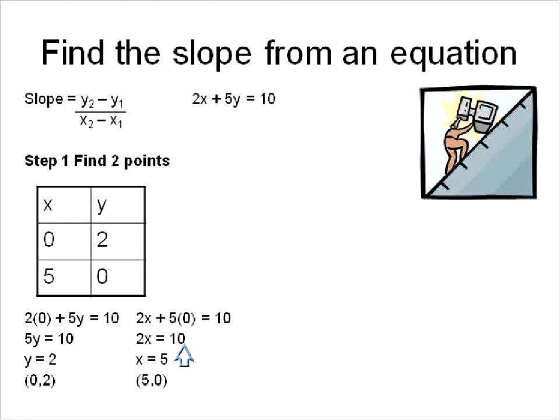And then over here, I have 2x is equal to 10. When I'm solving for x, I'll find that x is equal to 5, and that gives me the point 5, 0. So I can substitute into this table that information.